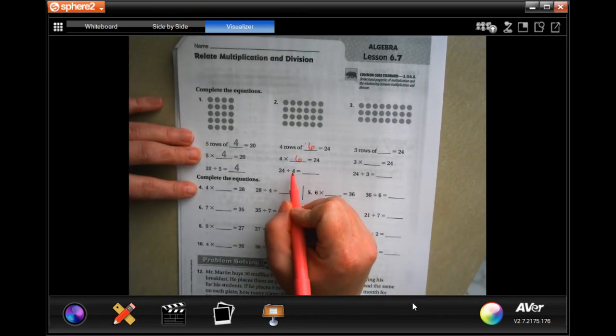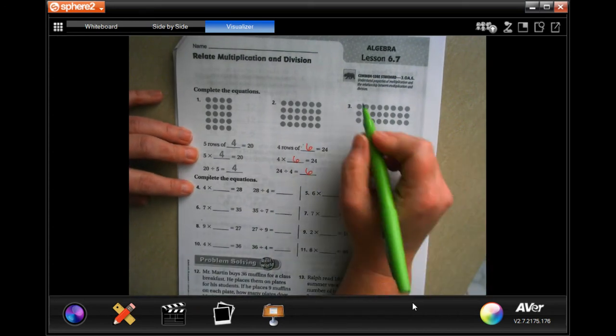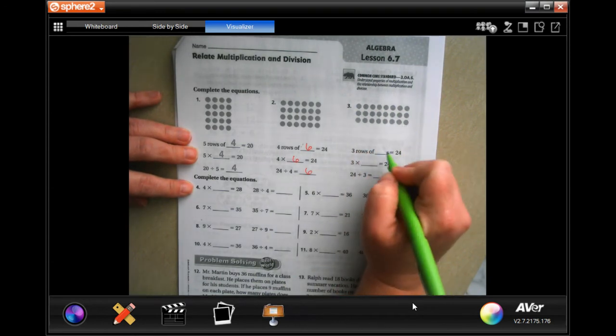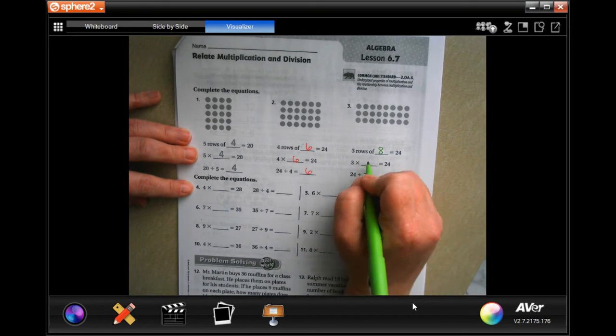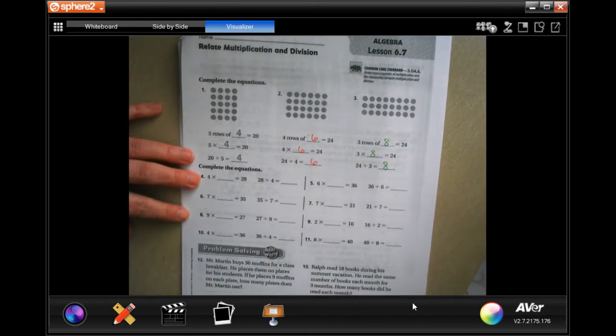Three rows of one, two, three, four, five, six, seven, eight is 24. Three times eight is 24, and 24 divided by three is eight.